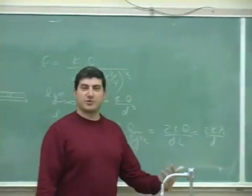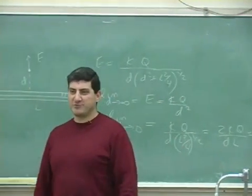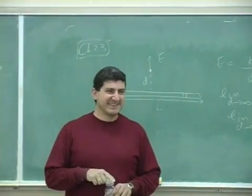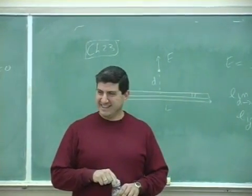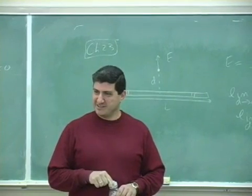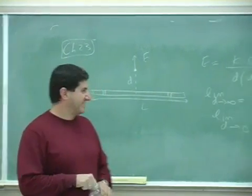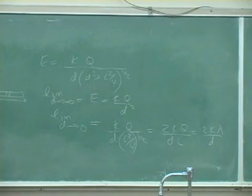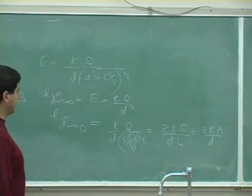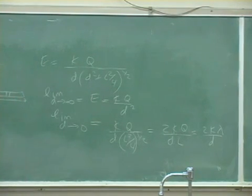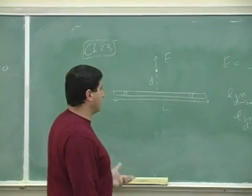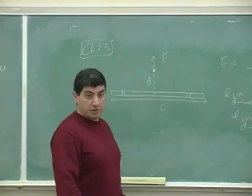And at that point, you just bow down to physics. Isn't that wonderful? So 2k lambda over d — they give you the same answer as d goes to 0.